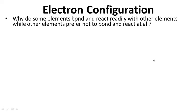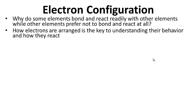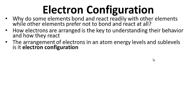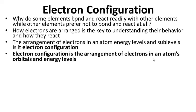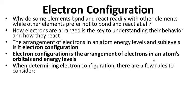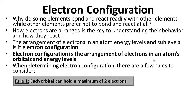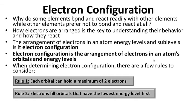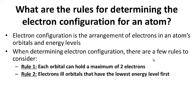Electron configuration. Why do some elements bond and react readily with other elements, while others prefer not to bond and react at all? How electrons are arranged is the key to understanding their behavior and how they react. The arrangement of electrons in an atom's energy levels and sublevels is its electron configuration. When determining the electron configuration, there are two rules: rule 1, each orbital can hold a maximum of 2 electrons; rule 2, electrons fill orbitals that have the lowest energy level first.